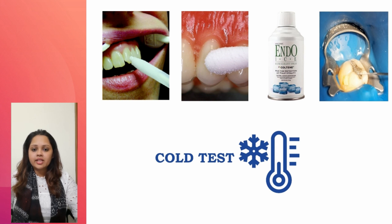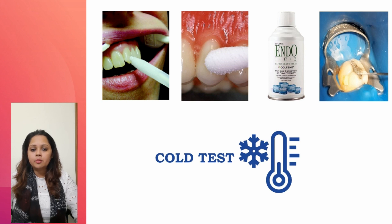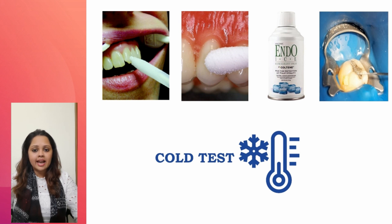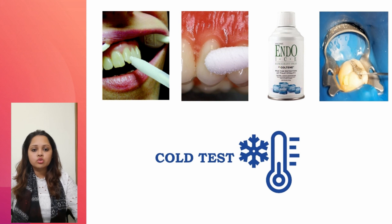To check the vitality of a tooth under a crown, we can use dry ice or carbon dioxide snow, since it has a temperature of minus 72 degrees Celsius. The coldness is carried through the surface of the crown to the tooth.